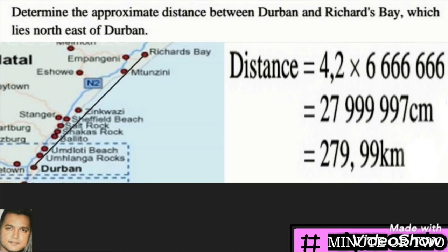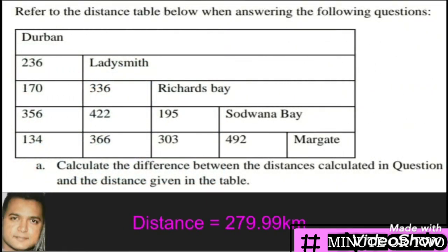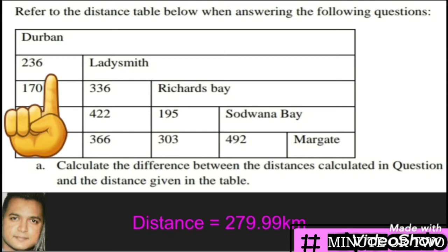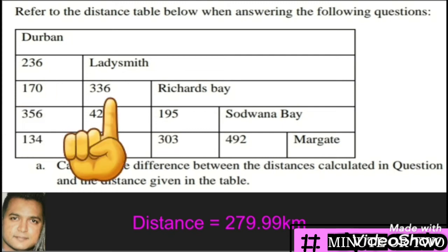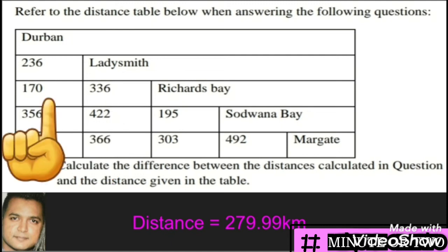The next part asks us to calculate the difference between the distance we calculated and the distance given in the distance table. Reading the table: Durban to Ladysmith is 236 kilometers, and Ladysmith to Richards Bay is 336 kilometers. Looking at the distance between Durban and Richards Bay directly in the table, we find it is 170 kilometers.